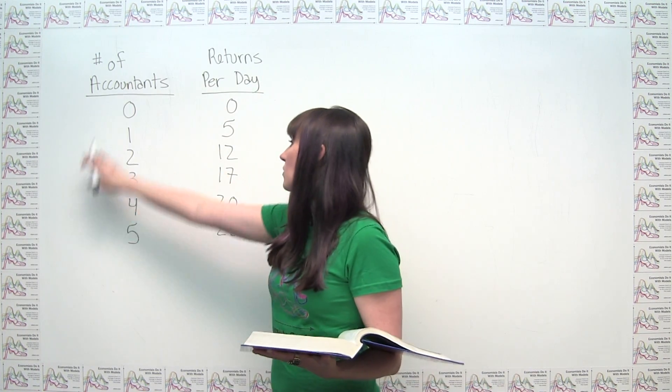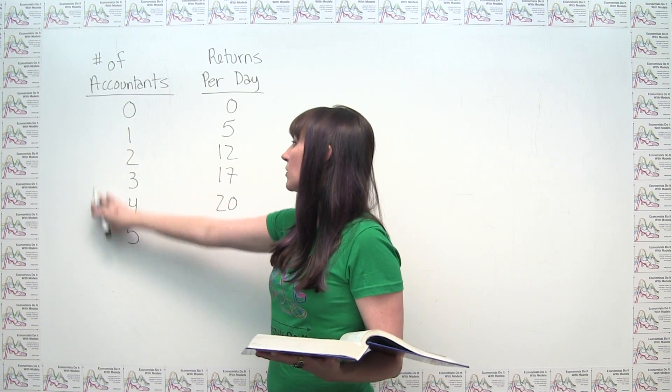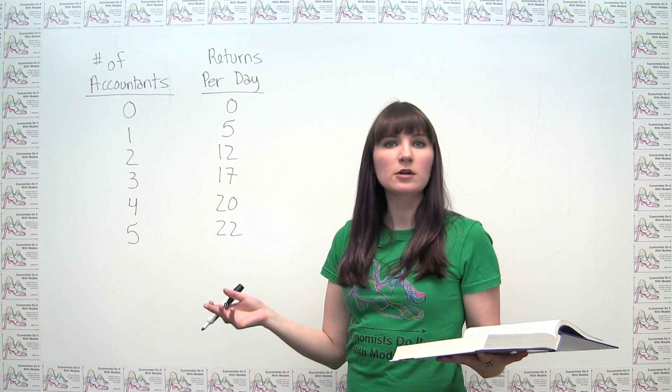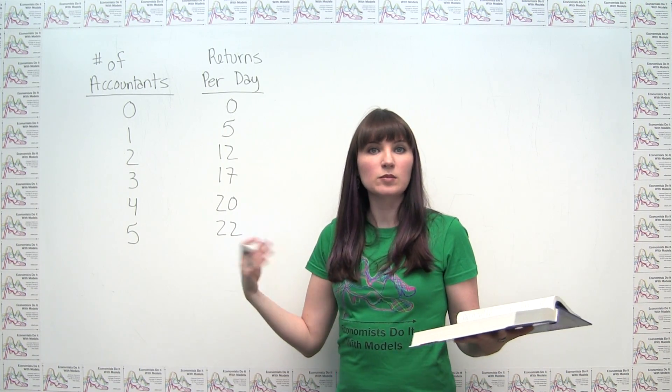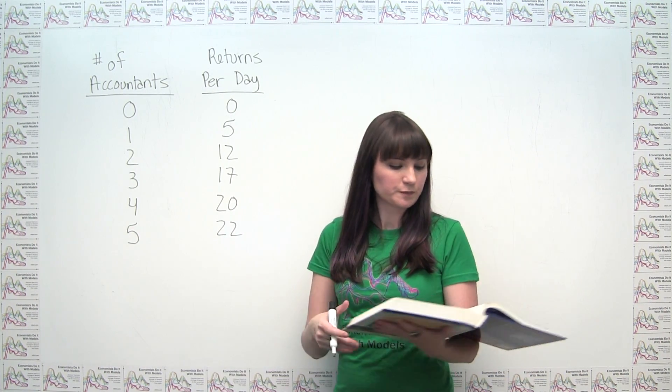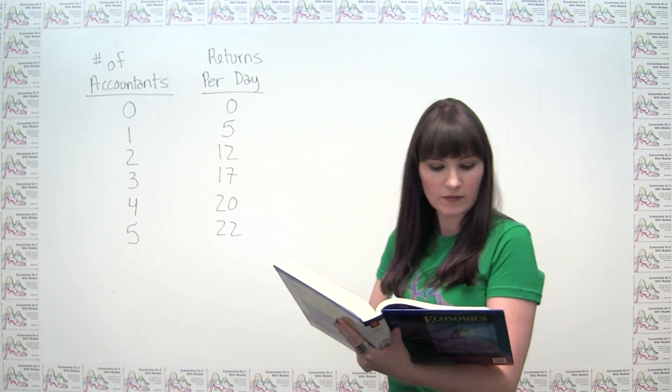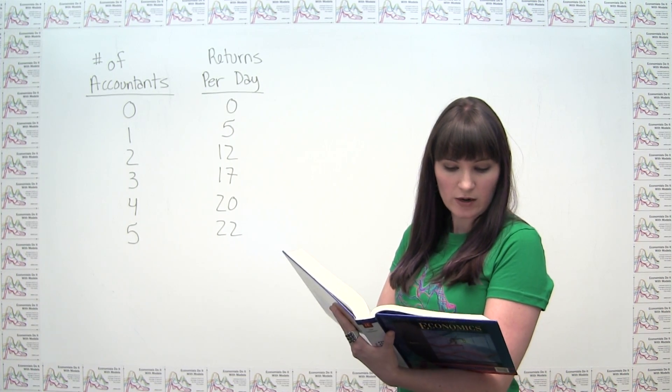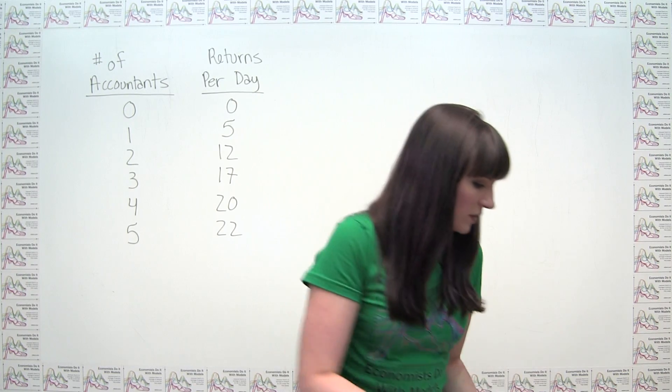So here, if we're only moving around the number of accountants, we're only changing the amount of labor. This is representative of a short run situation. So we can calculate the marginal product of each accountant.